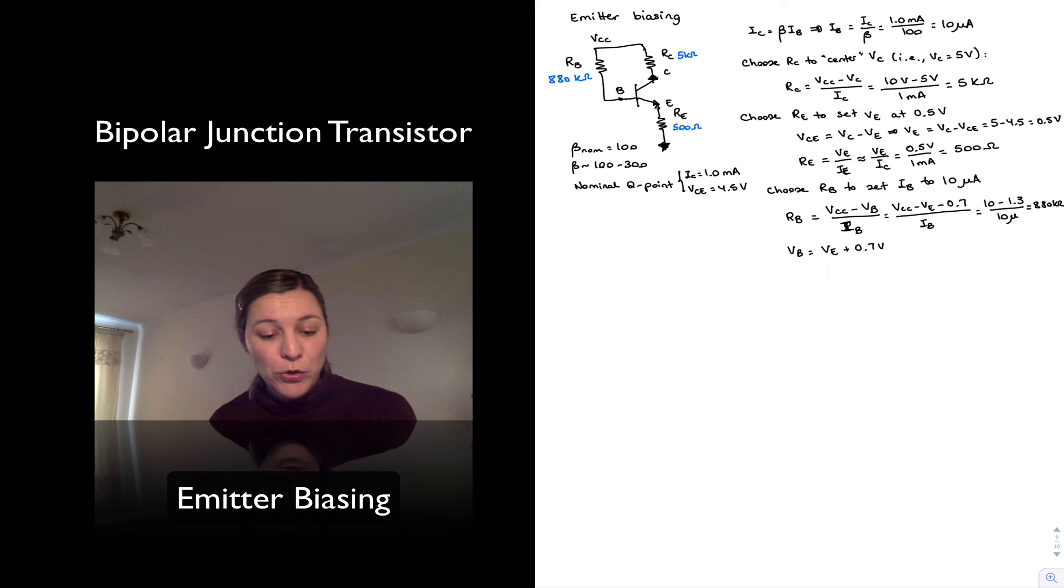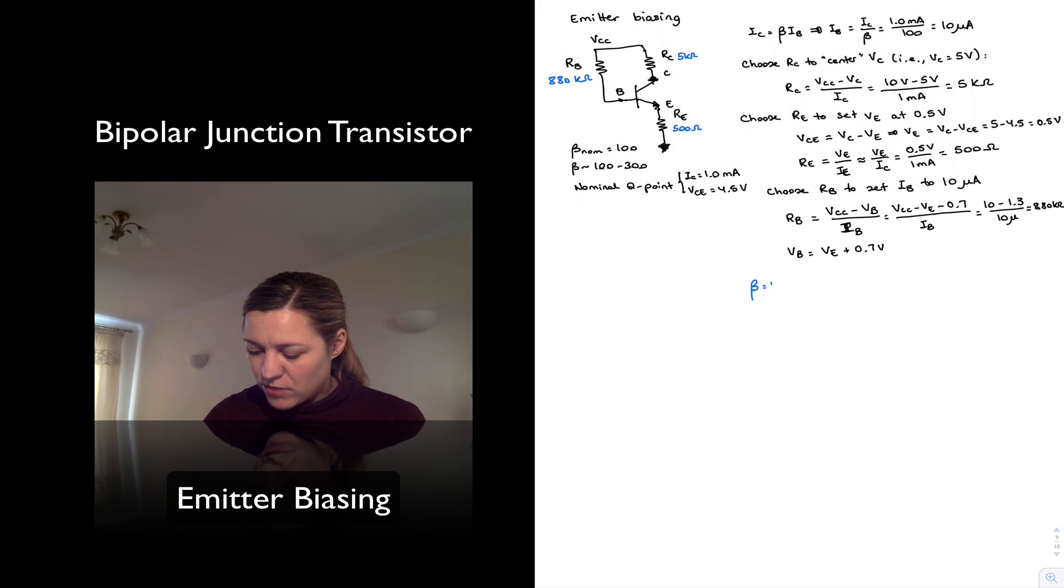That's supposed to give me the Q point that I want. If we look at the simulations that we run, we got that for beta equals 100, IC was equal to 1.06 milliamps. So very close.